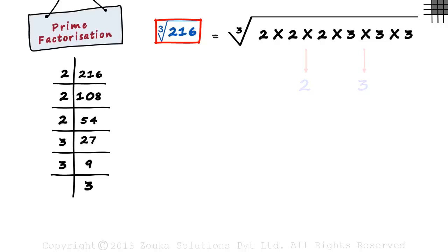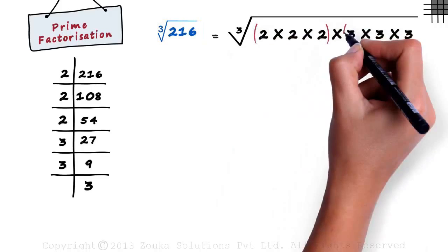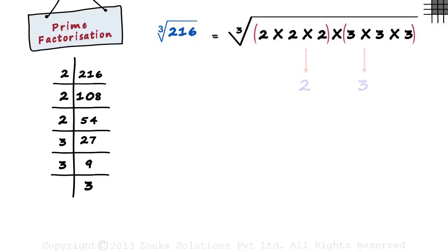Hence, to find cube root of 216, we group the three 2's together and the three 3's together. And from each group, we pick just one number and multiply them.